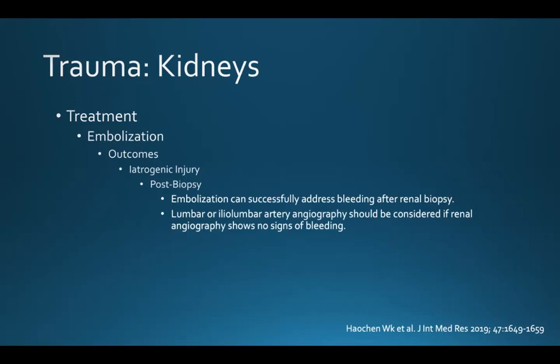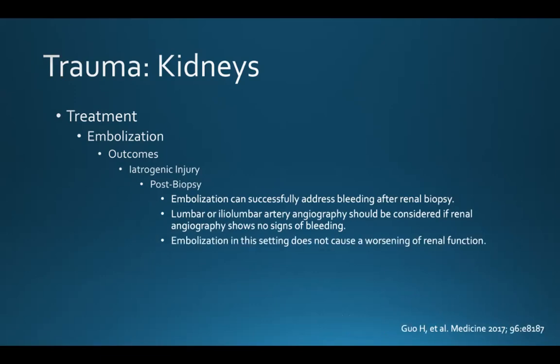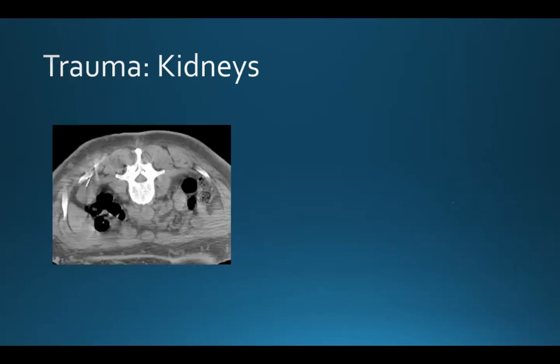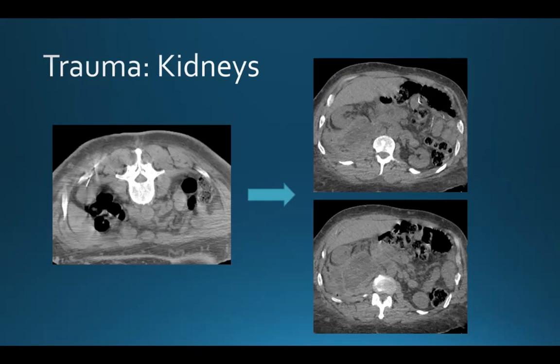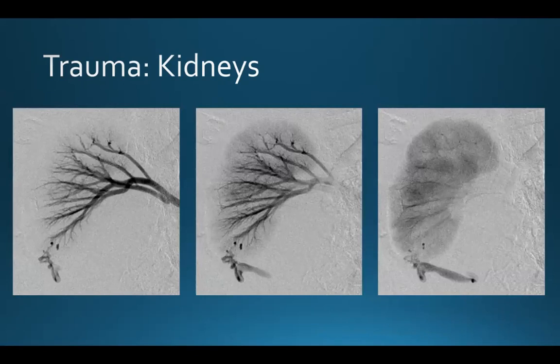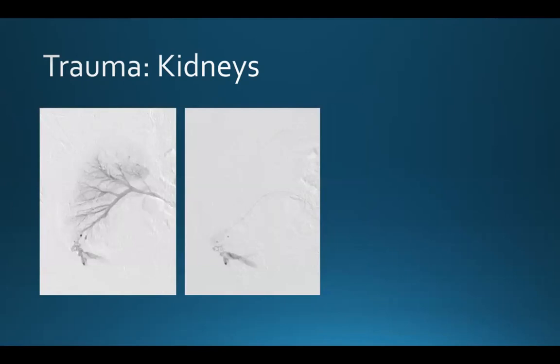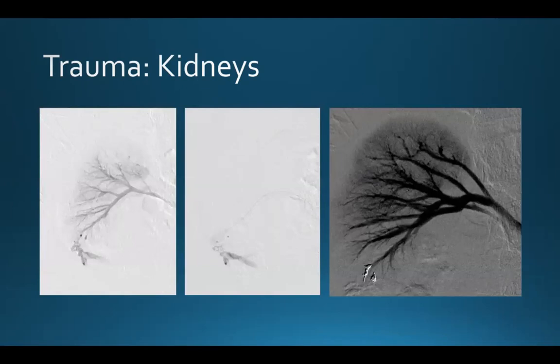After biopsy, embolization can successfully address bleeding. But if the initial angiogram is negative, lumbar or iliolumbar artery angiography should be considered as potential sources of bleeding. Embolization in this setting does not cause worsening of renal function. Here's a case example: this is a picture of the kidney during a biopsy procedure. Several hours later the patient re-presented with a large posterior perinephric hematoma. The angiogram demonstrated extravasation from a lower pole renal artery, and selective microcatheter catheterization allowed placement of micro coils to embolize the two involved branches, preserving as much functioning renal parenchyma as possible.